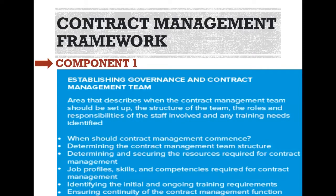Component one: Establishing governance and the contract management team. This area describes when the contract management team should be set up, the structure of the team, the roles and responsibilities of the staff involved, and any training needs identified. This includes: when contract management should commence, determining the contract management team structure, determining and securing the resources required, job profiles, skills and competencies required, identifying the initial and ongoing training requirements, and ensuring continuity of the contract management function.